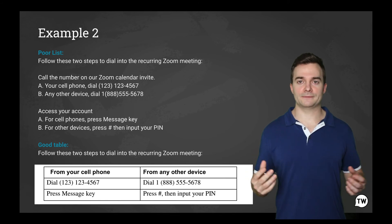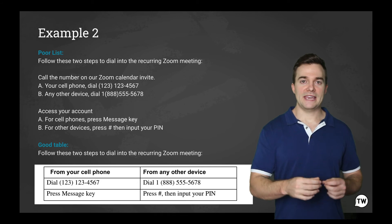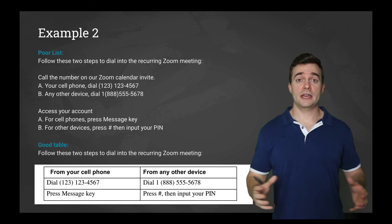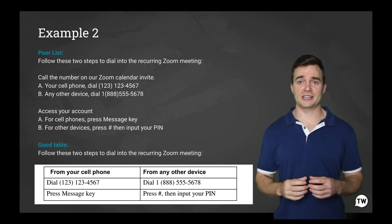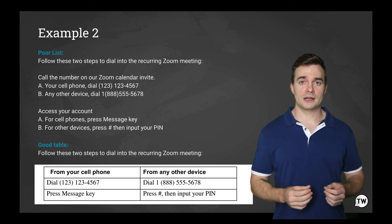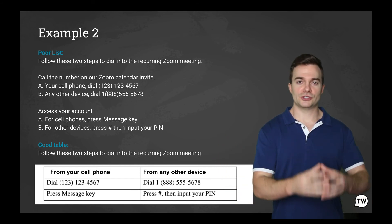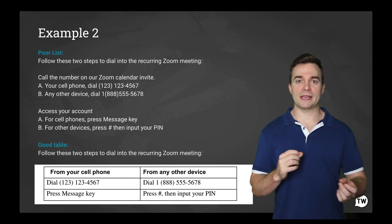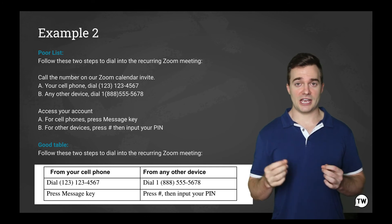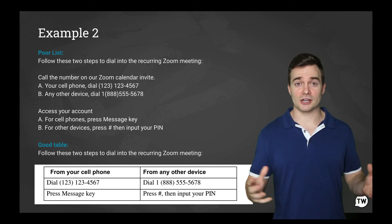Follow these two steps to dial in the recurring Zoom meeting. Call the number on your Zoom calendar invite. So we have A, your cell phone. Dial 1, 2, 3, 1, 2, 3, 4, 5, 6, 7. B, any other device, dial 1, 8, 8, 8, 5, 5, 5, 5, 6, 7, 8. Access your account A for cell phones. Press message key. B for other devices. Press the hash number. Then input your pin. Let's turn this into a good table. It now says follow these two steps to dial in to the recurring Zoom meeting. As you can see, the table makes information much more easily digestible for the audience. It only takes a second to understand. And when it was written out before, you'd have to process it. And it could take maybe 10 times as long to understand.